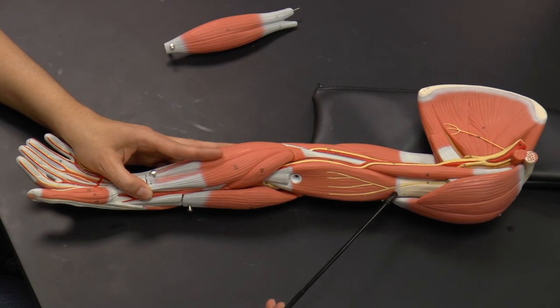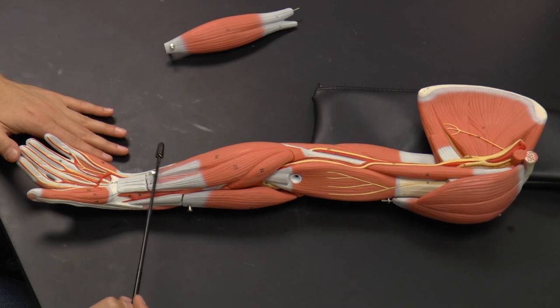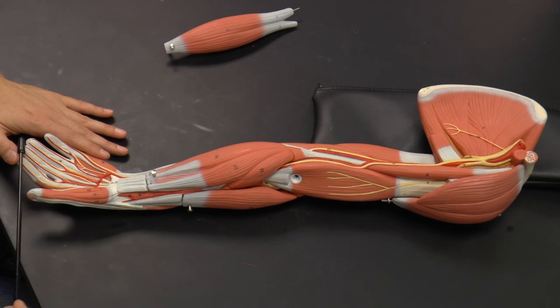And then you can see that this brachialis muscle is actually a major muscle of the arm as well to help flex the forearm. So here you can see the brachialis muscle. And now we're just going to move our way distally, further away towards the forearm and then towards the hand.